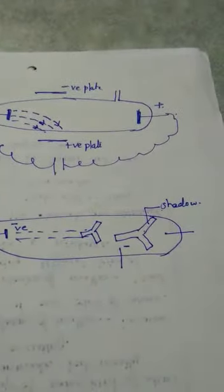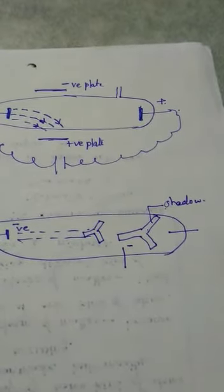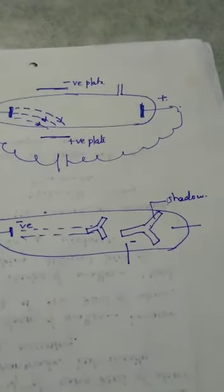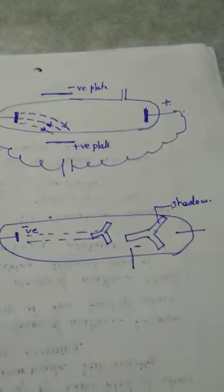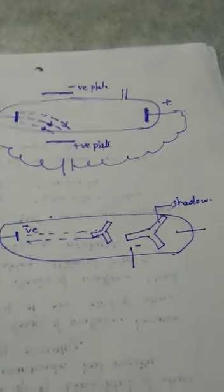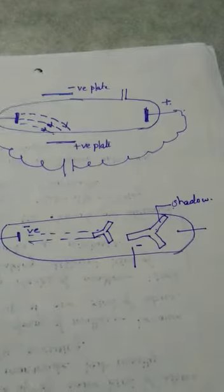So it was seen that if an opaque object is placed in the way of the cathode rays, then it casts a shadow on the other side.